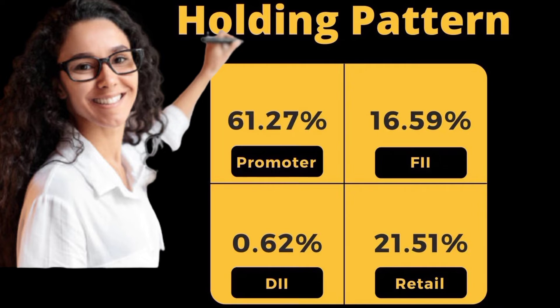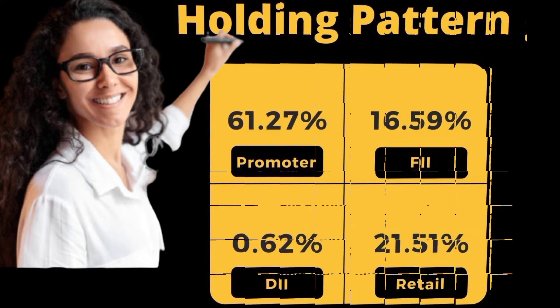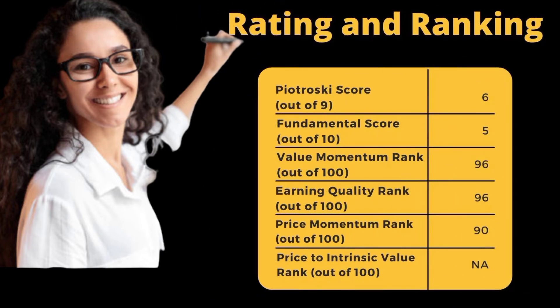Domestic individual investors: 21.62 percent, retail investors: 21.51 percent. Ranking — Piotroski score: 6, fundamental score: 5, value momentum rank: 96, earning quality rank: 96, price momentum rank: 90, price to intrinsic value rank: zero.